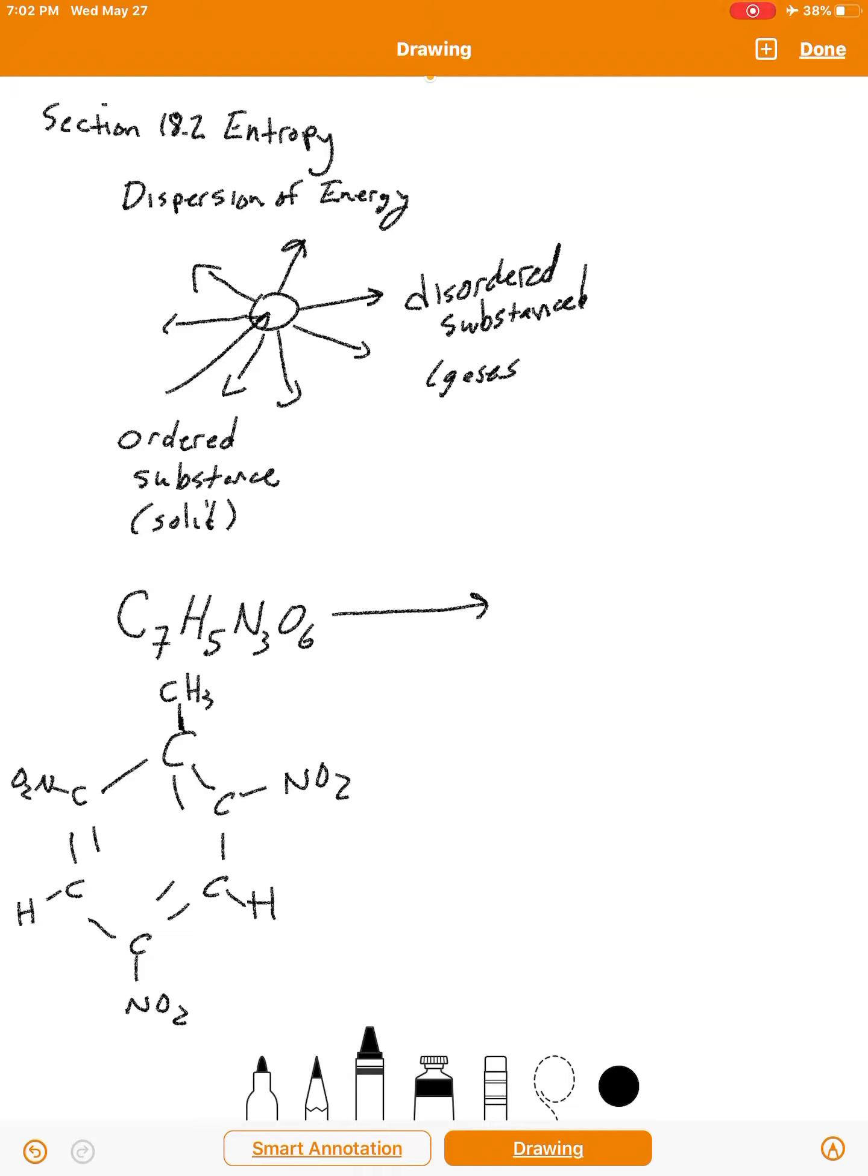And what it will do is it will break up into carbon dioxide molecules. So this is a solid. H2O molecules, and N2 molecules. Okay. So what has happened is it's gone from a highly ordered substance, one compound in a solid form, into a larger number of gaseous molecules which fly off into space.